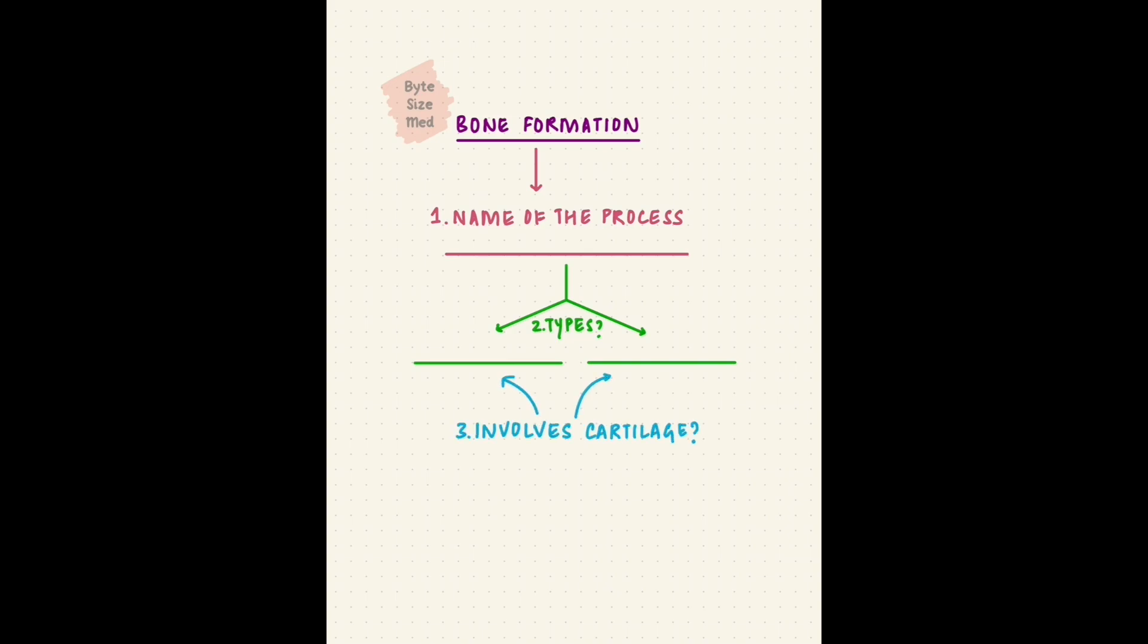Bone remodeling happens throughout life, but let's go back to their origins now - bone formation. Your task is to recall: what is that process called, what are the two ways that can happen, which one involves cartilage, and I'll give you two examples - the parietal bone and the humerus. They form by which of these two processes? Pause the video here.